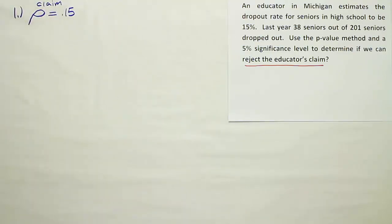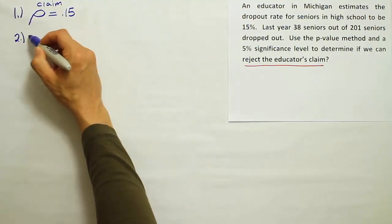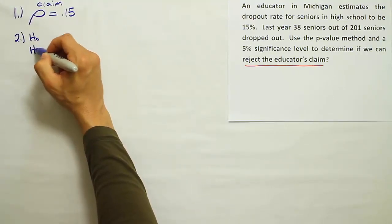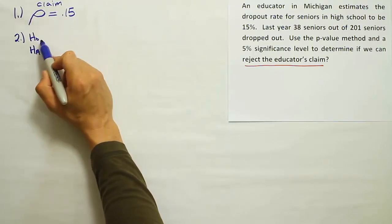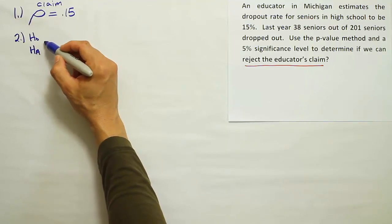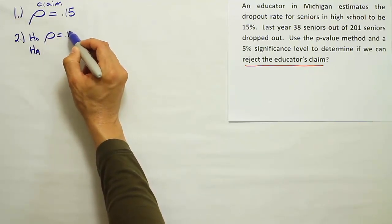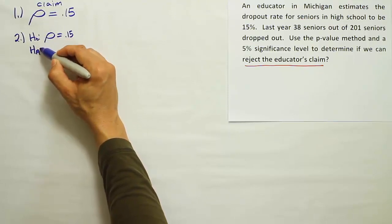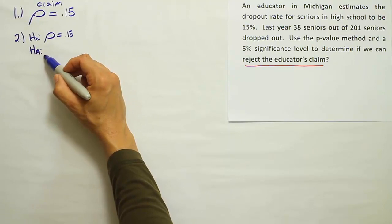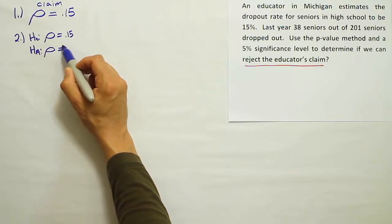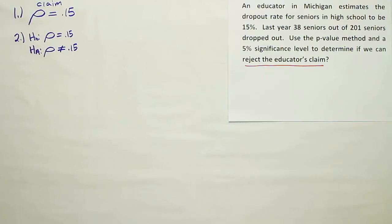Okay, so we have the claim in the problem. Let's identify H0 and HA now. That'll be our step two. Anytime a claim has an equal to sign, we know we're dealing with H0. So this claim is the same as H0. So rho is equal to 0.15 is our H0. Our HA then has to convey the opposite idea. So that means that rho is not equal to 15%, or 0.15 is HA.